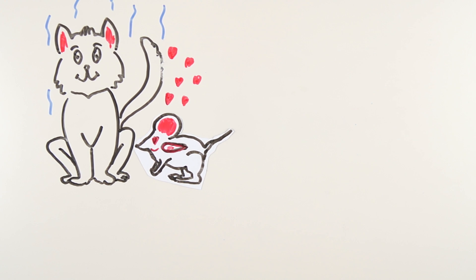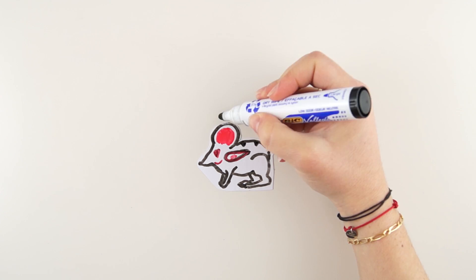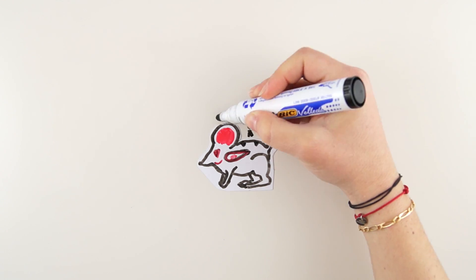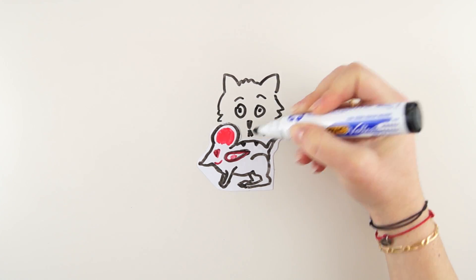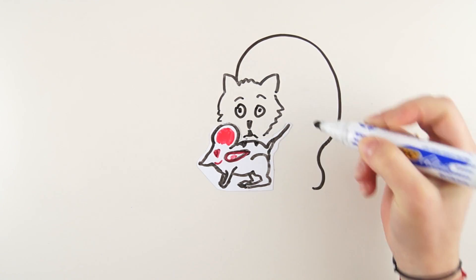In the end, infected mice have more chances to walk in places frequented by cats and thus more chances to get caught by a cat.